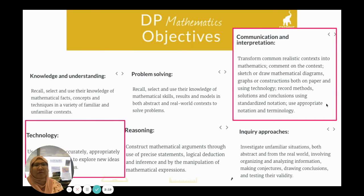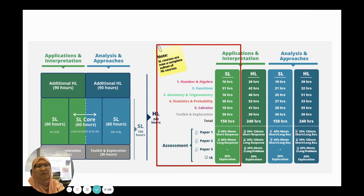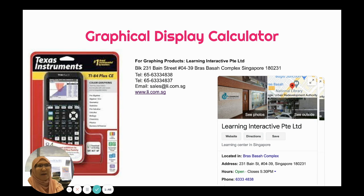What your senior is trying to say is that in Math AI, the hardest part is actually the technology component, or the technology objective, together with communication and interpretation. Under assessments for Math AI, you will be required to use your calculator or your GDC for all your papers. Unlike AA, where paper one requires no calculator — so in the Math AI course, the graphical display calculator, or GDC, will be your friend.